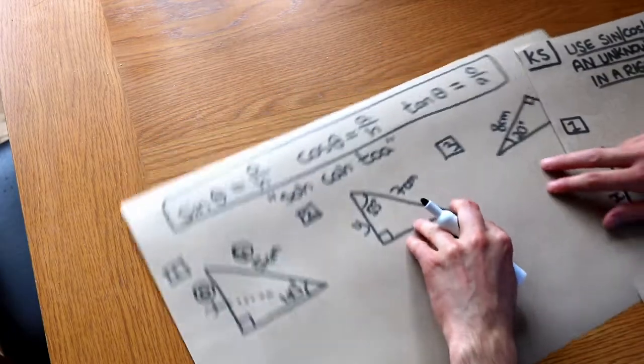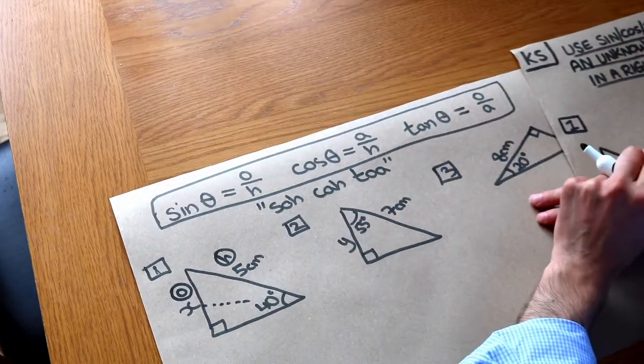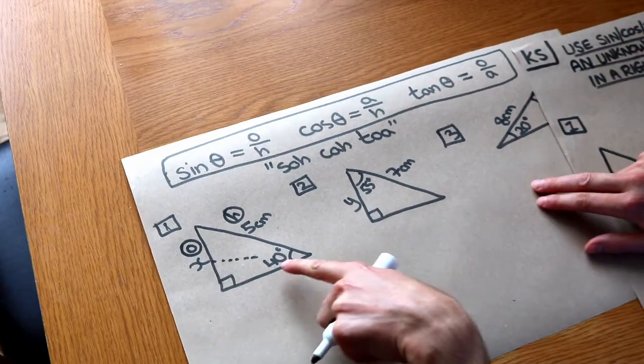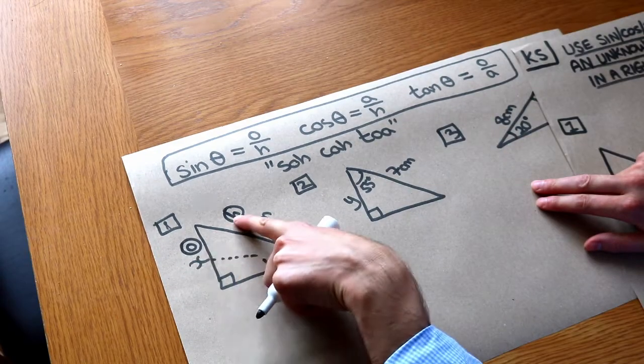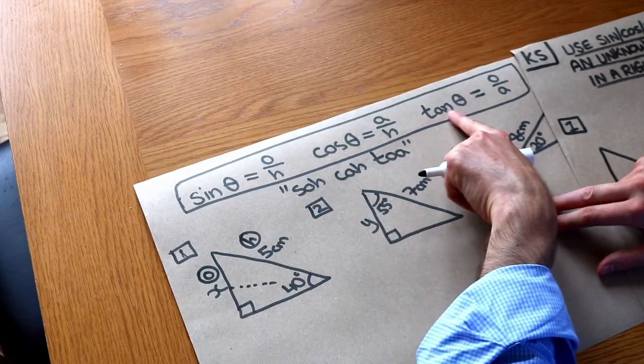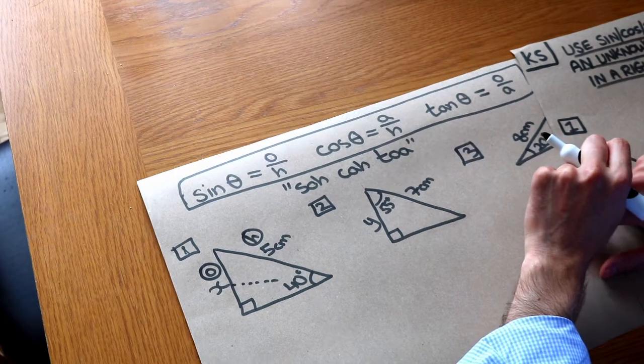Now then we use one of these magic things up here to work out how to relate this angle and these two sides here. So we've got sine, cos, and tan. These are known as trigonometric functions.